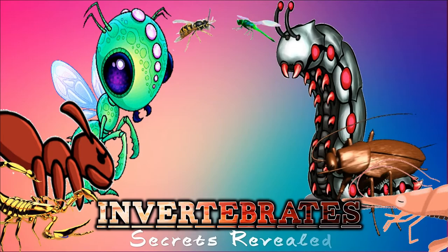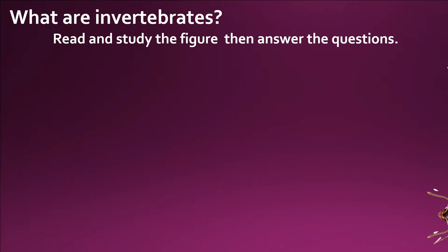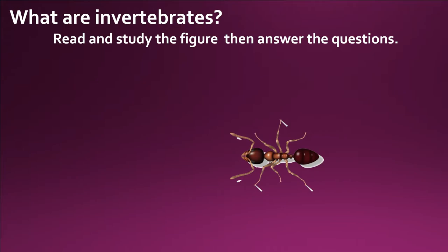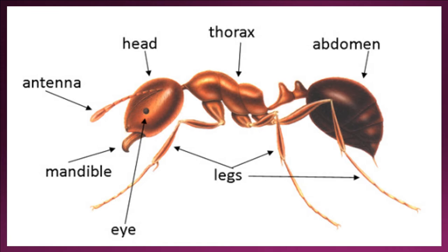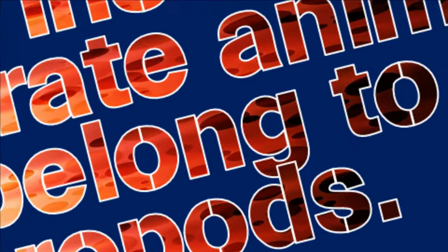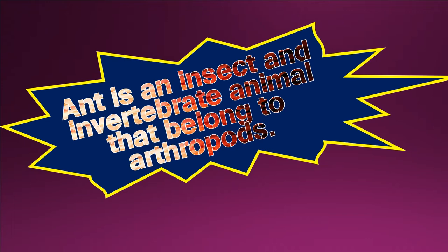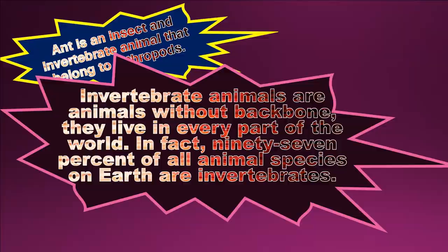Invertebrates: Secrets revealed. A closer look at the different classes and phylum of invertebrates. An ant is an insect and invertebrate animal that belongs to arthropods. Invertebrate animals are animals without a backbone; they live in every part of the world. In fact, 97% of all animal species on earth are invertebrates.